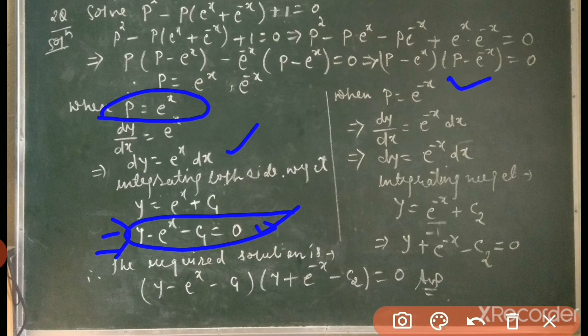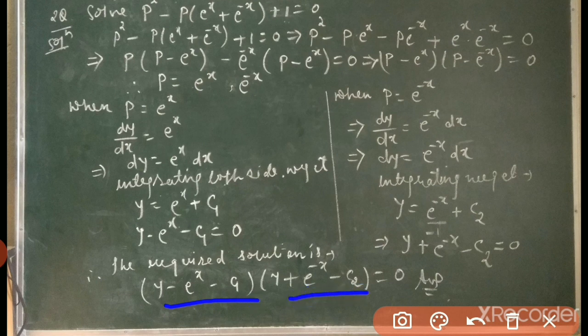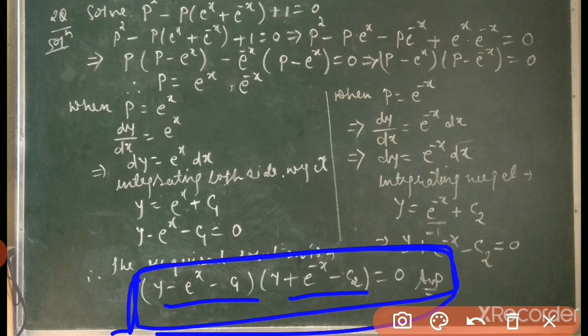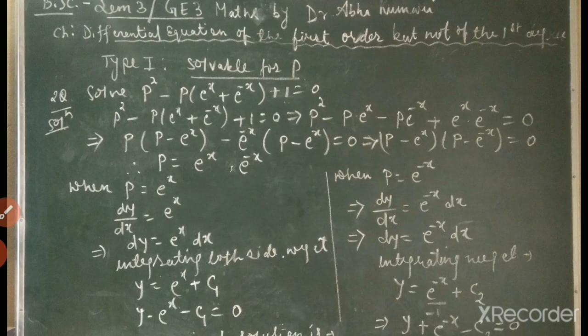When p = e⁻ˣ: dy/dx = e⁻ˣ, so dy = e⁻ˣ dx. Integrating both sides: y = e⁻ˣ / (-1) + c₂, giving y + e⁻ˣ - c₂ = 0. Therefore the required solution is: (y - eˣ - c₁)(y + e⁻ˣ - c₂) = 0. This gives the required solution for the differential equation p² - p(eˣ + e⁻ˣ) + 1 = 0.